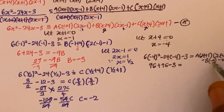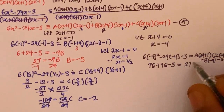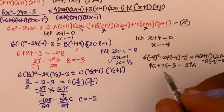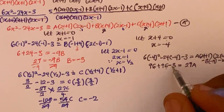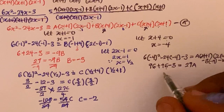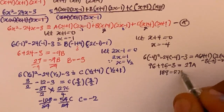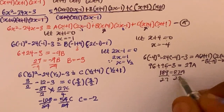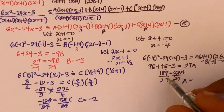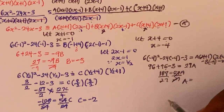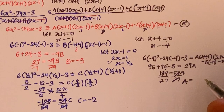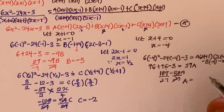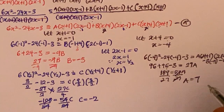So 96 plus 96 = 192, minus 3 = 189, equals 27A. Dividing both sides by 27: A = 189/27 = 7. So A equals 7.